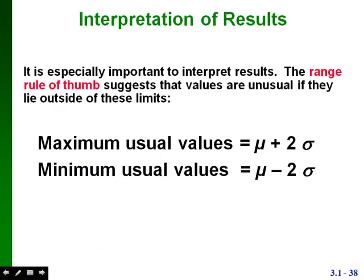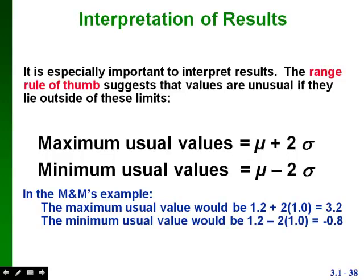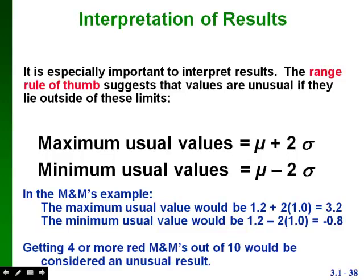Recall the range rule of thumb: values are unusual if they fall outside the maximum or minimum usual values (mean ± 2 standard deviations). In the M&Ms example, the maximum usual value = 1.2 + 2(1.0) = 3.2 red candies, and the minimum usual value = 1.2 - 2(1.0) = -0.8. Therefore, getting 4 or more red M&Ms out of 10 would be considered an unusual result.